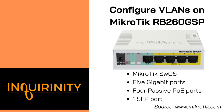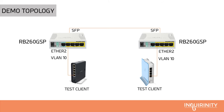The SFP port is recommended for inter-switch connectivity. For our demonstration topology, we have two RB260 GSP switches interconnected by one MikroTik direct attach cable via their SFP ports. The SFP port on both switches will be configured as a trunk port. Our test clients will be connected on Ether 2 of each switch, configured with a VLAN access port assignment of VLAN ID 10. We could also test assigning a different VLAN ID to check whether the clients can communicate.